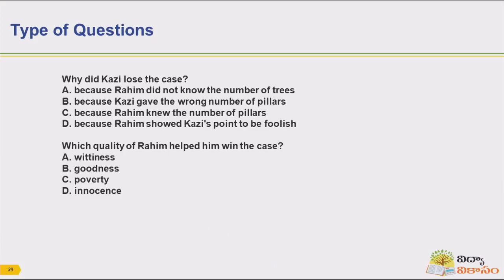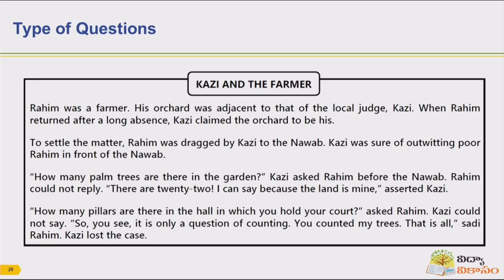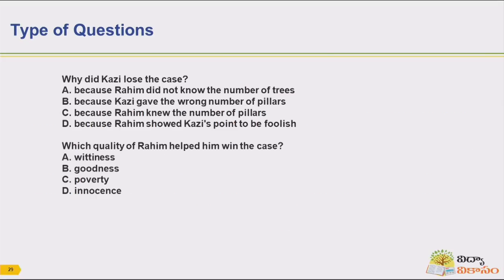Here, if you see the 'Kazi and the Farmer' passage, this is a small passage related to English language. They have given this passage and asked questions: why did Kazi lose the case, and which quality of Rahim helped him win the case? After thoroughly going through the passage, only the student can answer these questions. They have to go through the passage thoroughly.